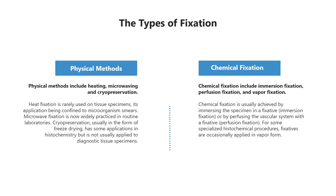Chemical fixation is usually achieved by immersing the specimen in a fixative — immersion fixation — or by perfusing the vascular system with a fixative — perfusion fixation. For some specialized histochemical procedures, fixatives are occasionally applied in vapor form.